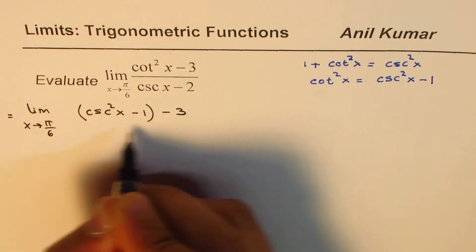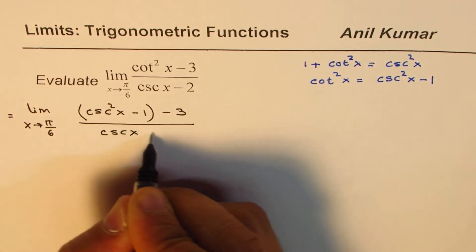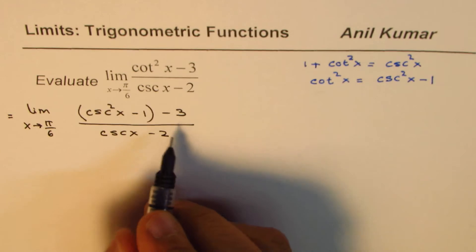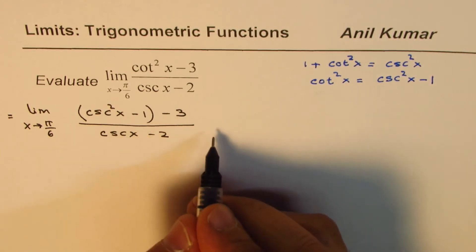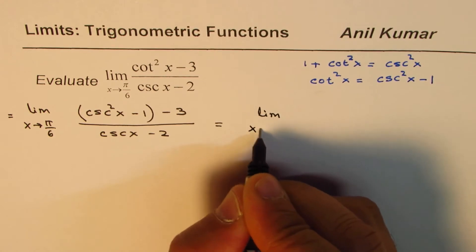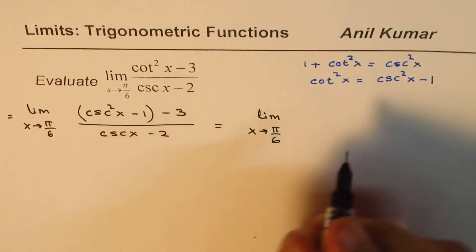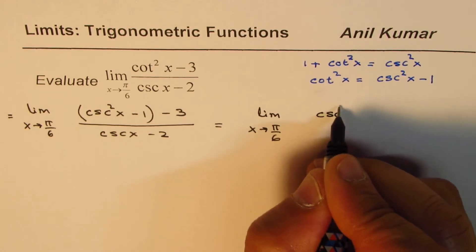minus 3 divided by csc x - 2. Now the numerator we could simplify and write this as limit x approaches π/6. So -1 - 3 is -4, so we get csc²x - 4 divided by csc x - 2.